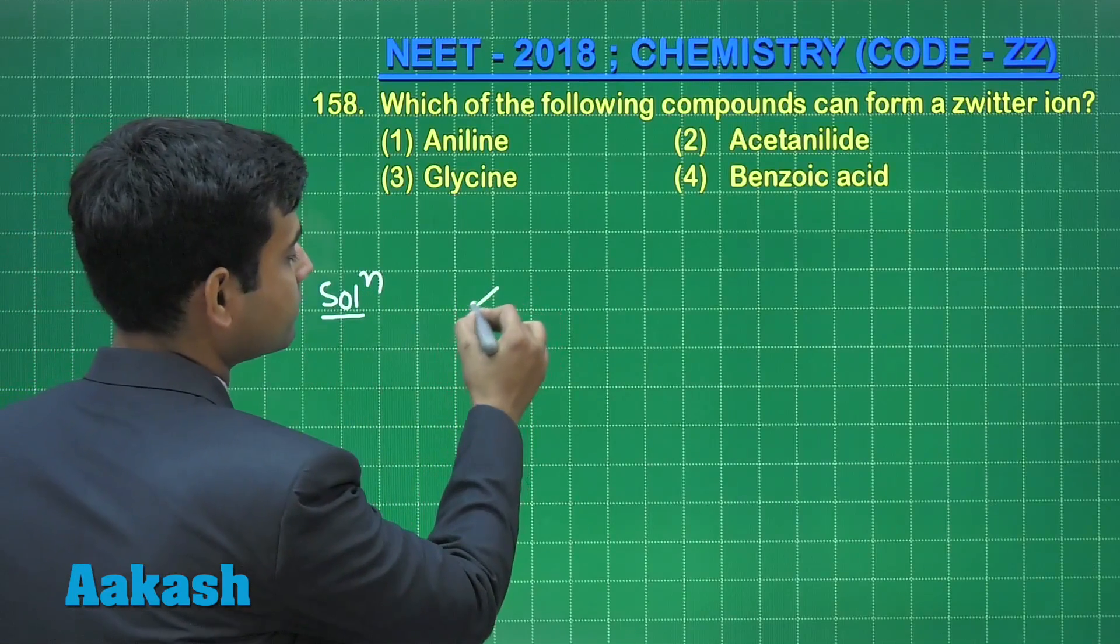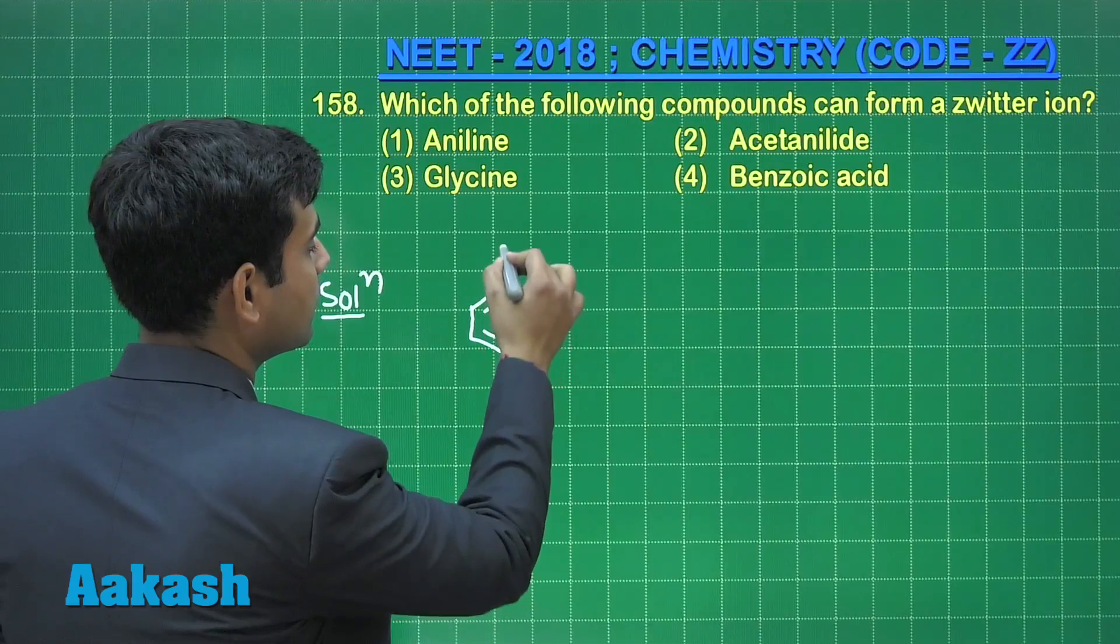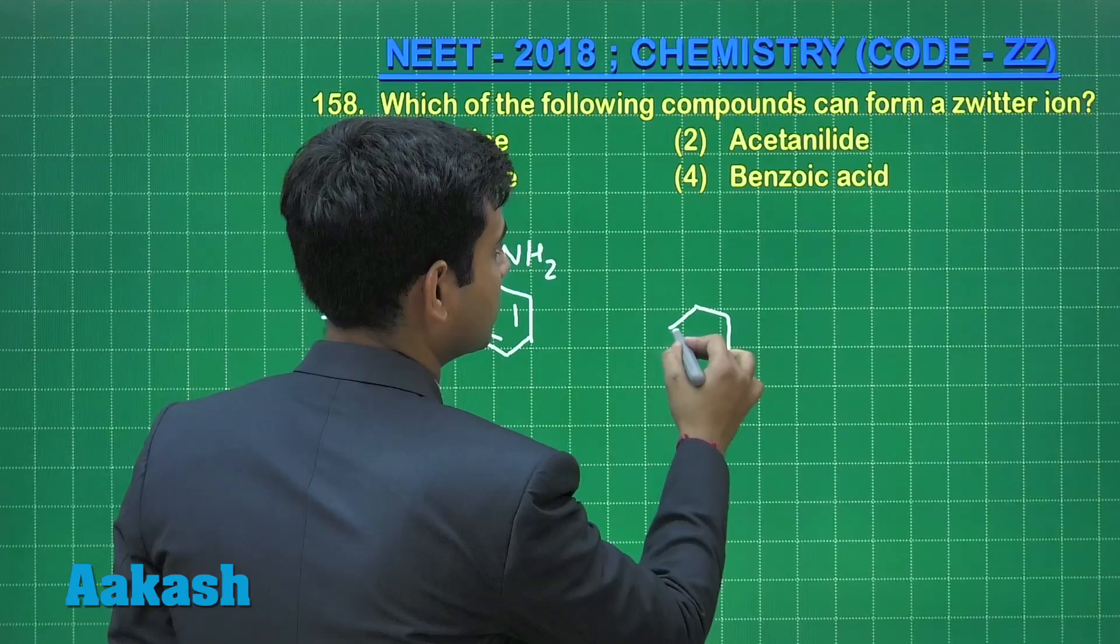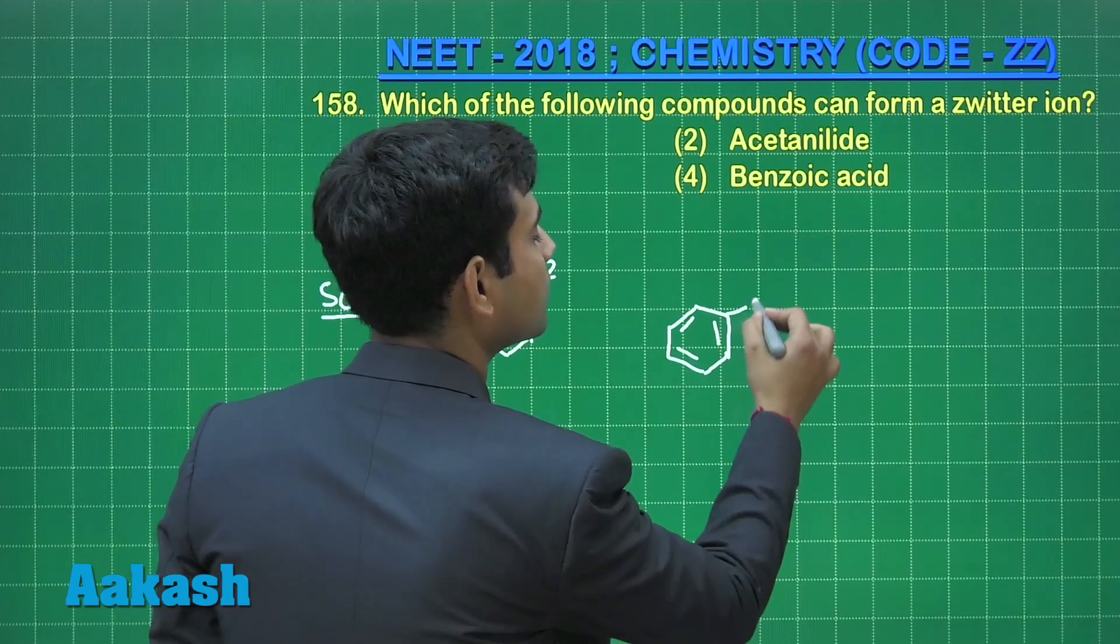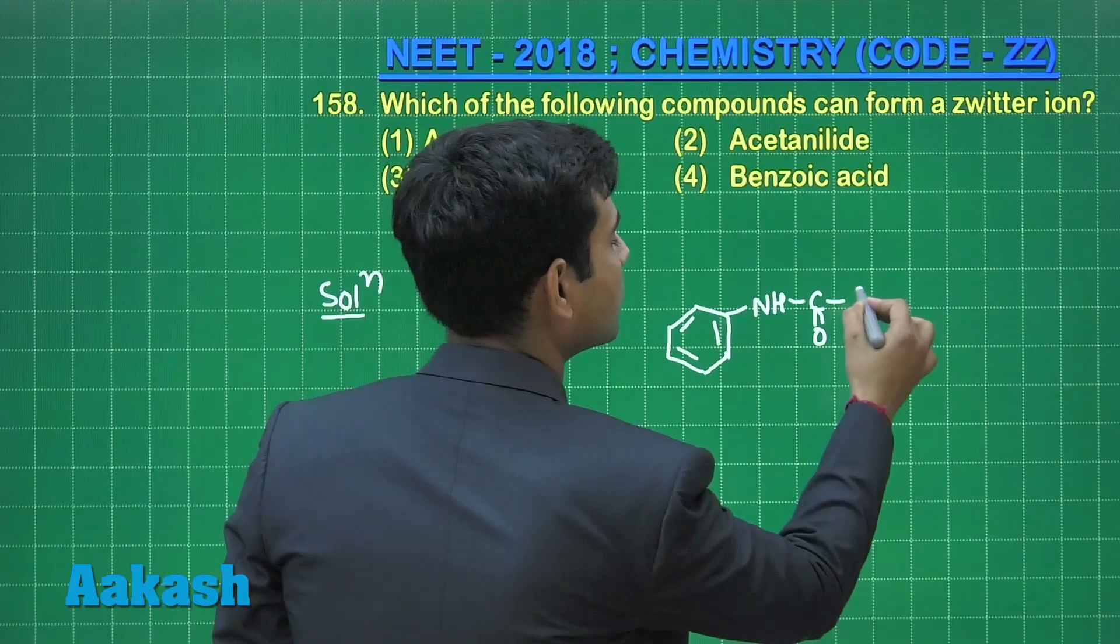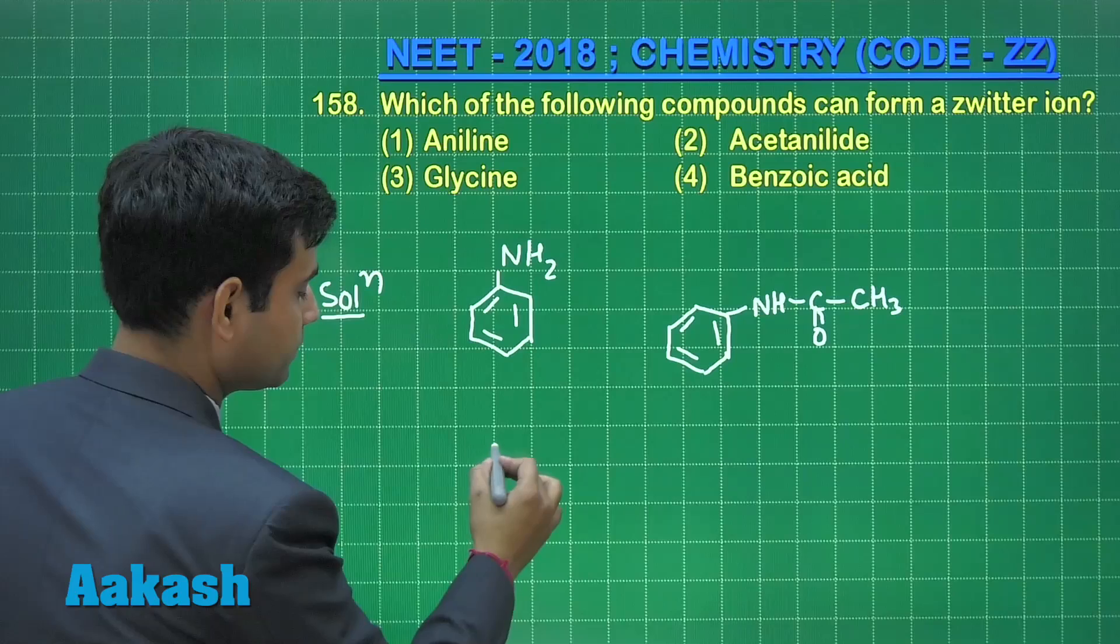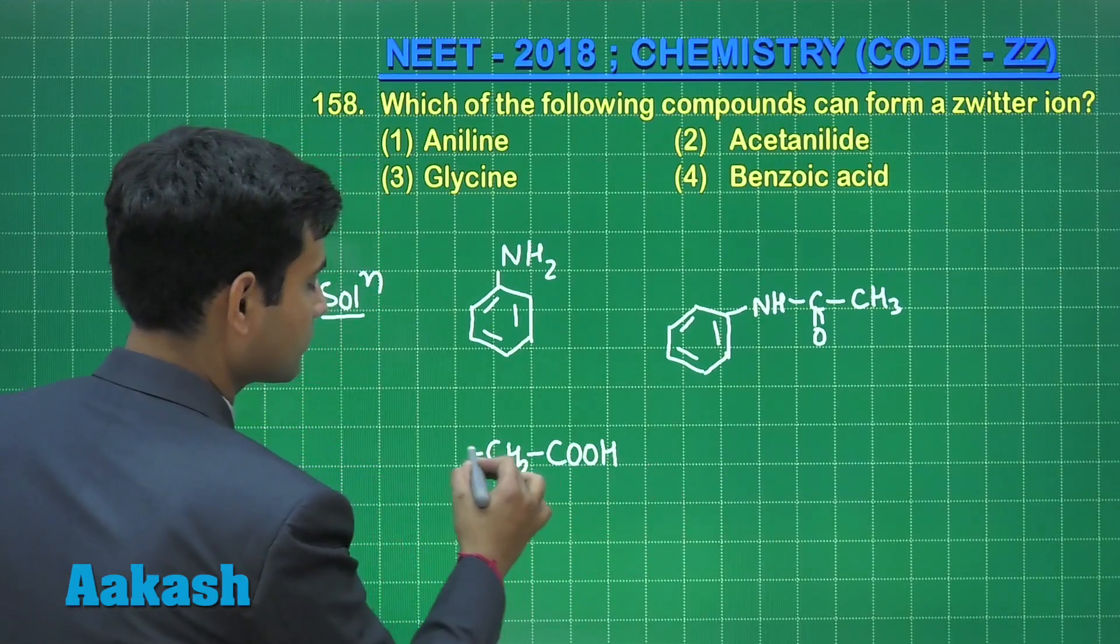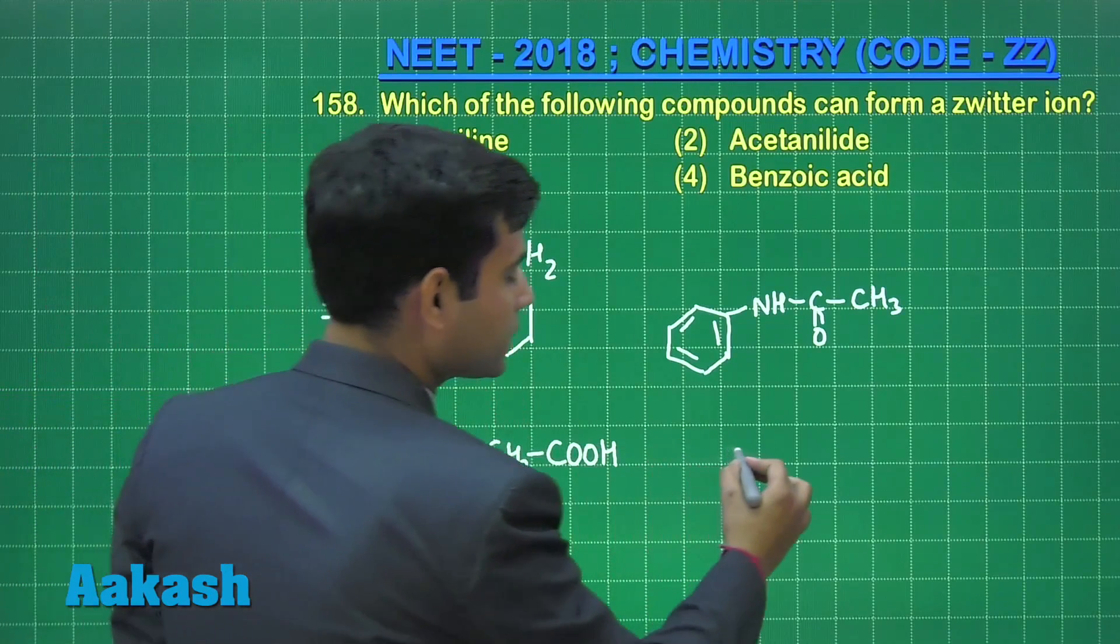First is aniline. Second option is acetanilide. Third option given is glycine. And the fourth option is benzoic acid.